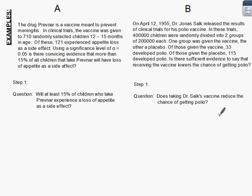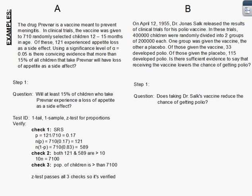The next part is to identify what test we're going to do. We have a one-tail, one-sample Z test for proportions. We're going to verify that we can do this test — there are three checks. Is it a simple random sample? We're told that they are randomly selected, so we can check that one off. For the second check, we have our sample proportion, which is 17% of the sample experienced loss of appetite.